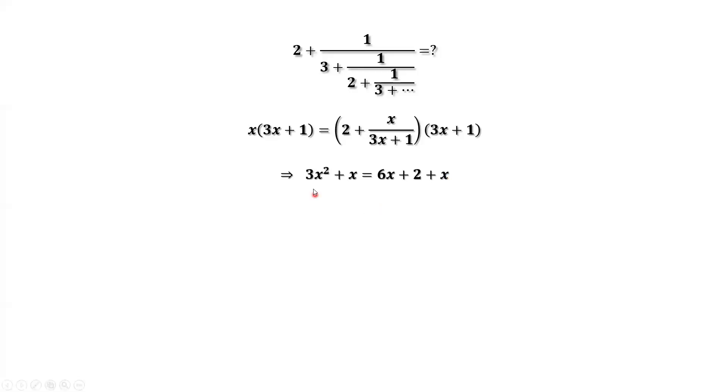Continue to simplify this equation and move everything to the left-hand side. Then we have 3x square minus 6x minus 2 equals 0. We use the quadratic formula to solve this quadratic equation. Then we have x equals negative of negative 6 plus minus negative 6 square minus 4 times 3 times negative 2 divided by 2 times 3.